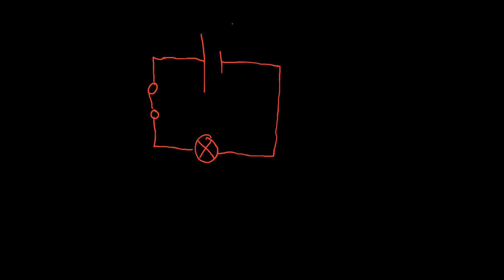This is a series circuit. We have here a cell connected to a bulb, and this here is a switch. But what makes this a series circuit? A series circuit is one where there's no choice of where the electrons can go. If you think about where the electrons are going, there's only one wire.